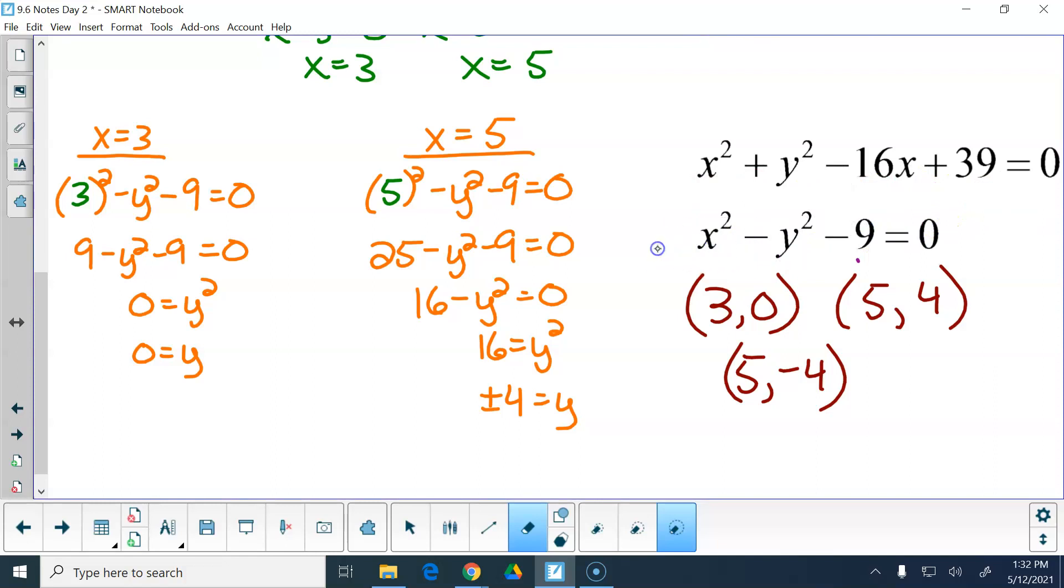If I do 5 comma 4, then I've got 25 plus 16 minus 80 plus 39, which would be 41 minus 80 is negative 39 plus 39 is 0. And then we have 25 minus 16 minus 9, that works out at 0 also. So if all three of them work out, all three of them are your answers. Questions, comments, concerns, clarifications.